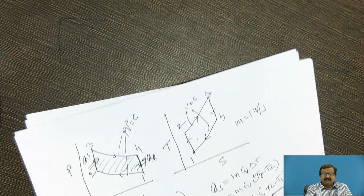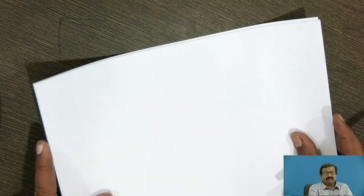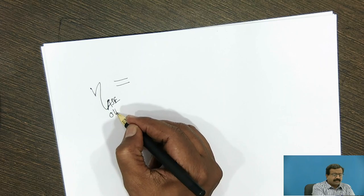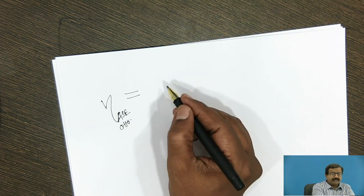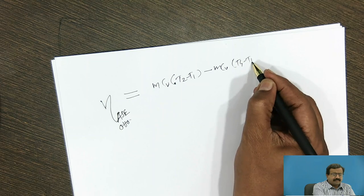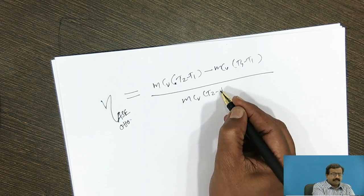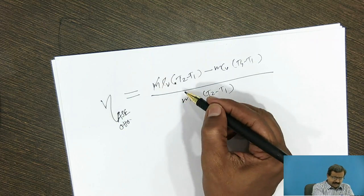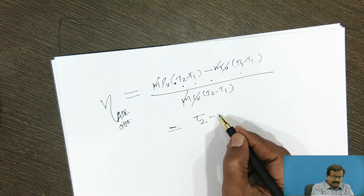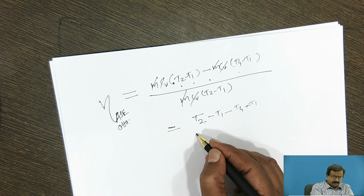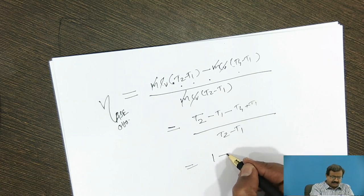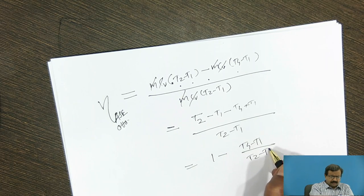Now we derive the expression for air standard efficiency (ASC) for the Otto cycle. Efficiency = (QS − QR) / QS = [m·Cv·(T3−T2) − m·Cv·(T4−T1)] / [m·Cv·(T3−T2)]. After cancelling m·Cv, we get (T3−T2 − T4 + T1) / (T3−T2), which simplifies to: η = 1 − (T4−T1) / (T3−T2).